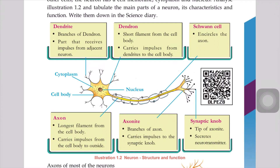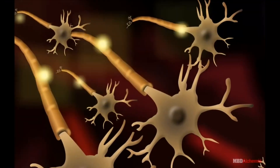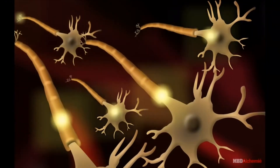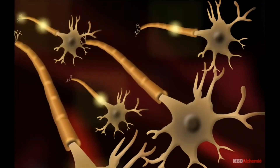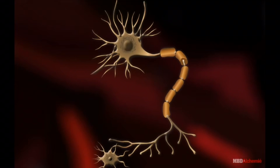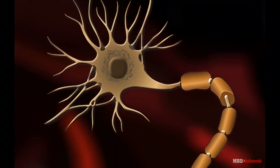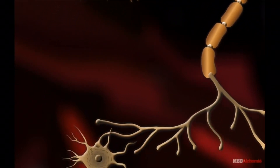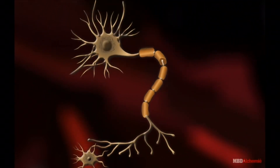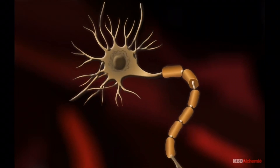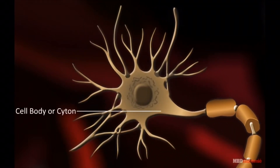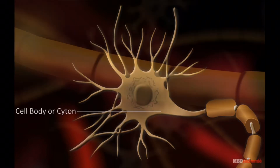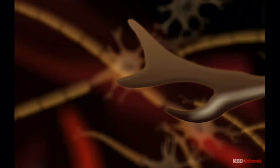The cell body is marked by filaments. There are short filaments and long filaments. The short filaments are called dendron, and the long filament is called axon. The end of the axon is called the synaptic knob.